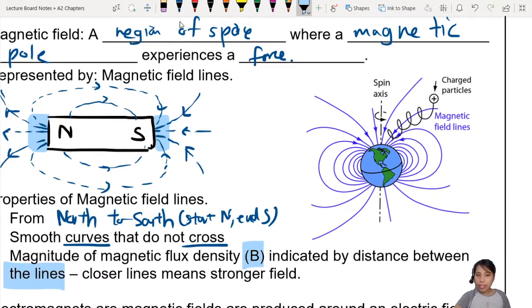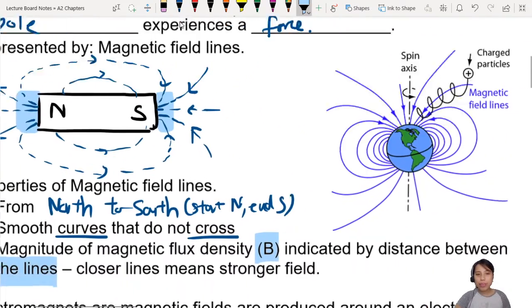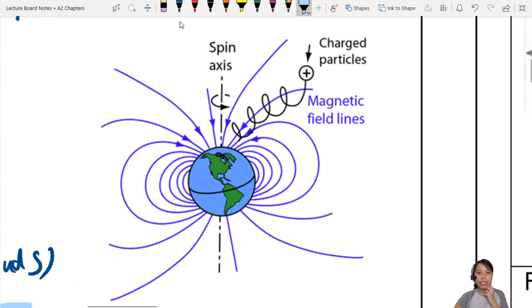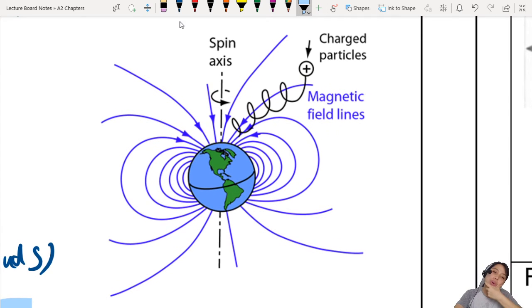In case you didn't know it, our Earth actually behaves like a magnet like this. See? So I was showing you the picture of it. So we have our geographic north and south pole.